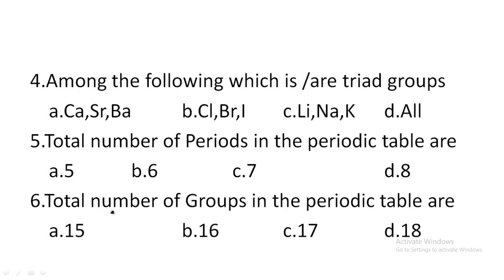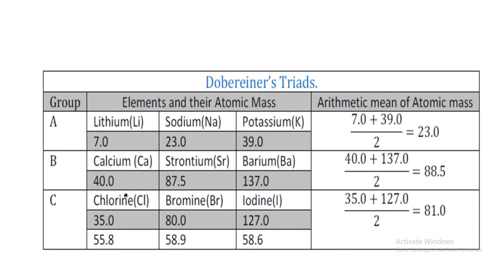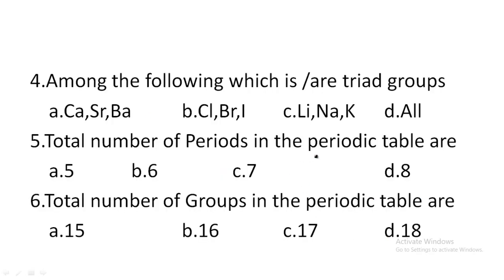Next one: among the following, which is a Dobereiner's triad group? Option A: calcium, strontium, barium; option B: chlorine, bromine, iodine; option C: lithium, sodium, potassium; option D: all of the above. Dobereiner's triads means three pairs. Lithium, sodium, potassium; calcium, strontium, barium; chlorine, bromine, iodine — and also sulfur, selenium — all are Dobereiner's triads. So option D, all are correct.